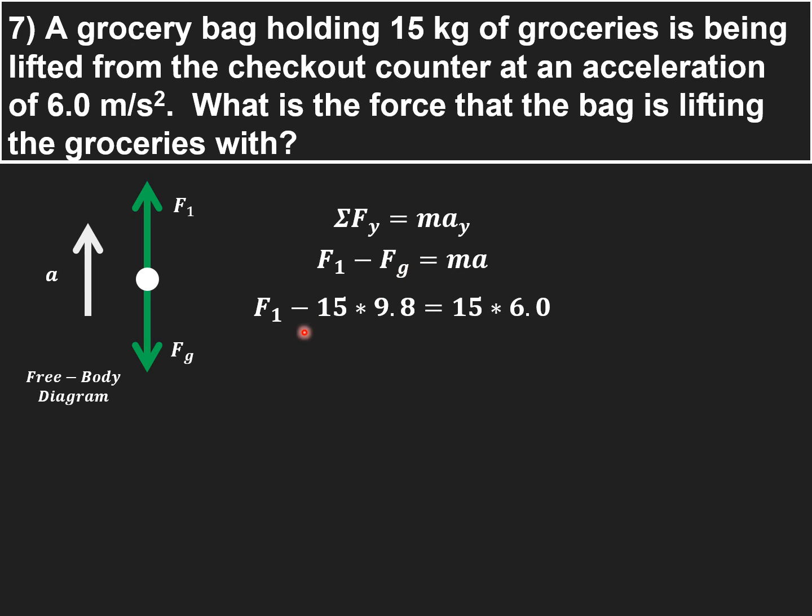Now force of gravity equals mass times 9.8. So 15 times 9.8 is going to give me that force of gravity. Mass times acceleration, 15 times 6. That's going to give me the net force on the right-hand side.